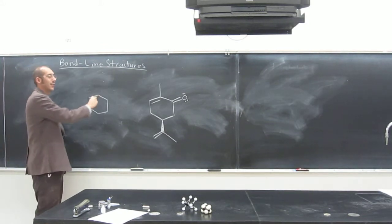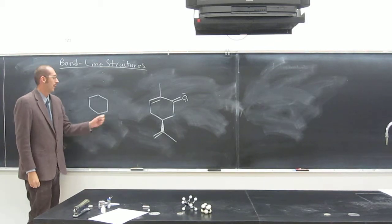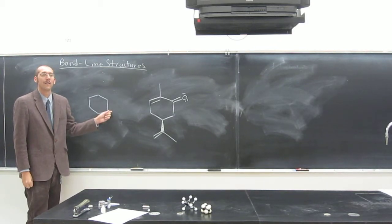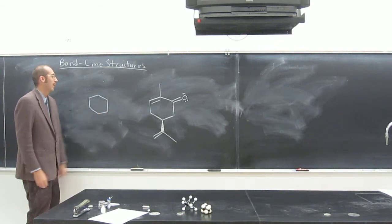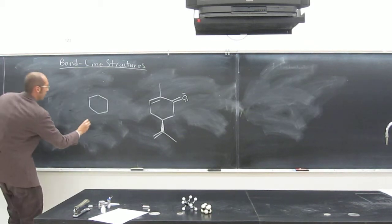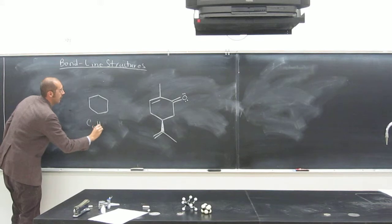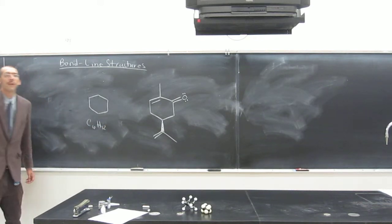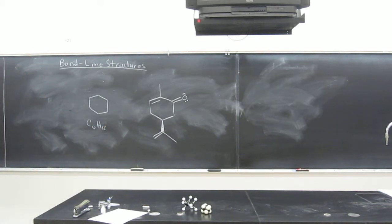How many hydrogens are attached? Two. What about there? Two. There? Two. So what's the molecular formula of this molecule? C6H12. Very good. I think Brandon got it first, right?